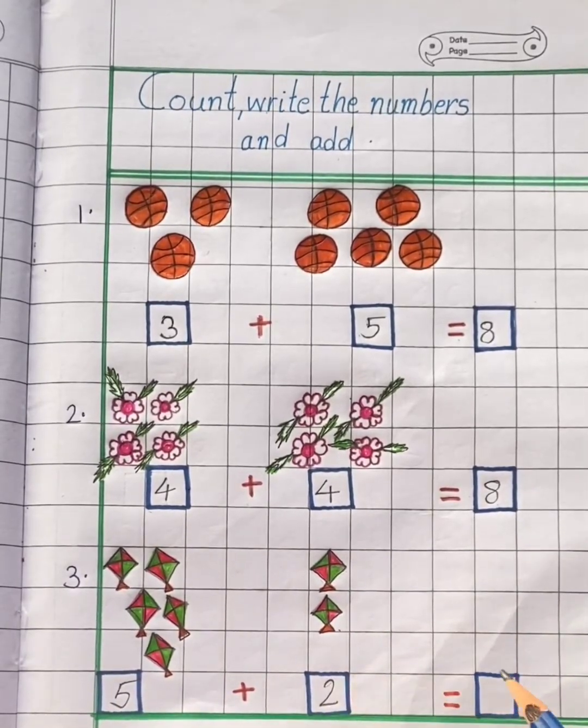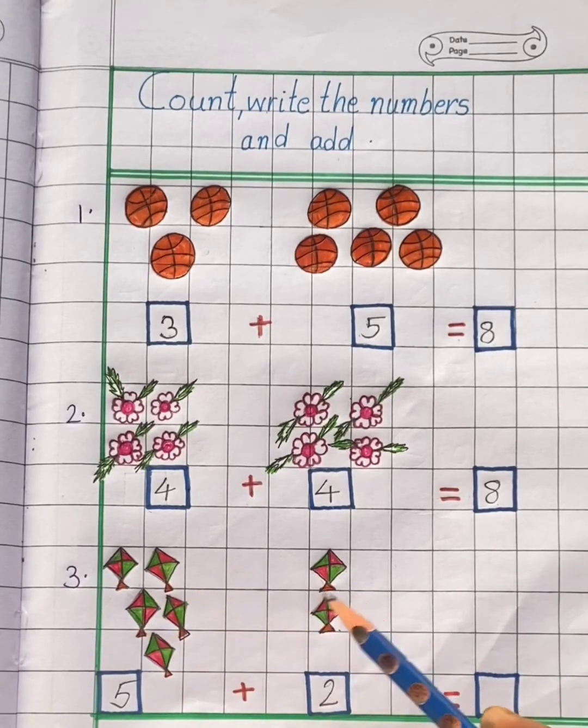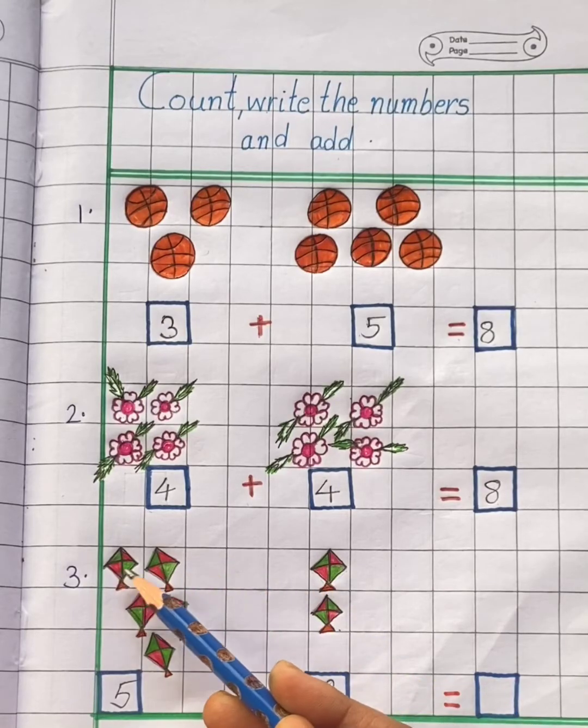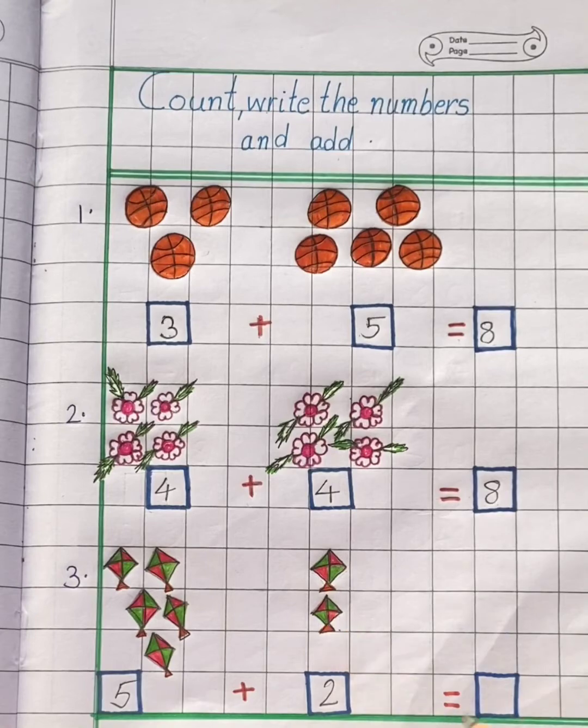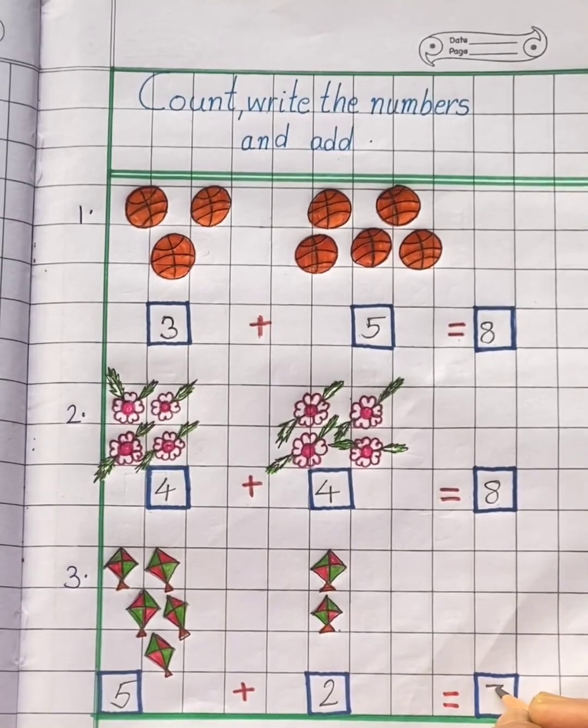Now we have to find the total number of kites. Now let's start counting the kites again. 1, 2, 3, 4, 5, 6, 7. So total we have 7 kites.